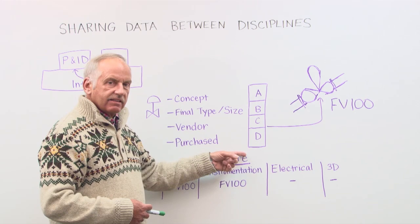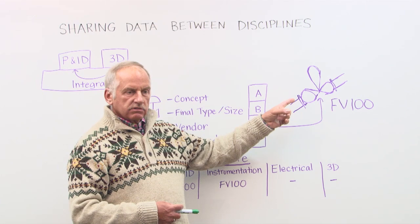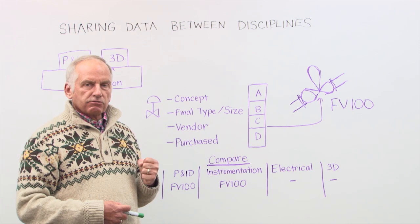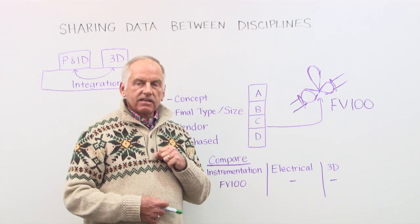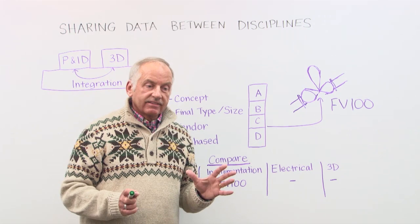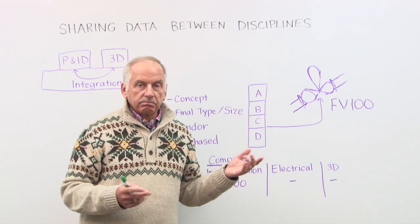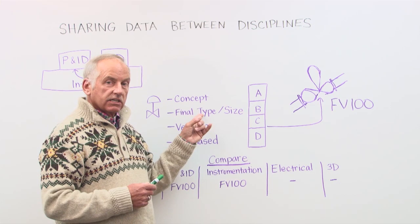Then when we can share the data with the downstream discipline, like for instance, I'm on the instrumentation side and I get the information from P&ID and I see that this valve is only in the A status. I say, well, I'm not going to touch that because the process guy is still working on that, and I'm not going to waste my time working on this valve while he's still maybe changing it.